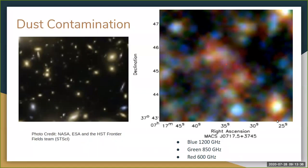And so a major problem that we have to deal with is dust contamination. So on the left, again, is the same Hubble field, but zoomed in on the center of the galaxy cluster MACS J0717, and on the right is the galaxy cluster MACS J0717, but in a SPIRE field. So in the SPIRE image, there's something interesting going on here in that it's actually a composite image. So blue represents 1200 gigahertz, green represents 850 gigahertz, and red represents 600 gigahertz.